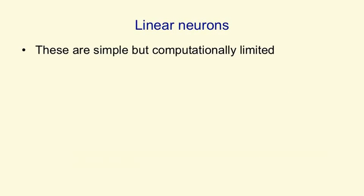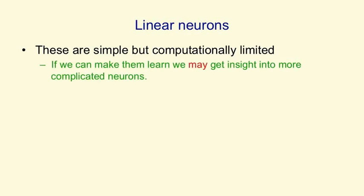The first kind of neuron I want to tell you about is the simplest. It's a linear neuron. It's simple. It's computationally limited in what it can do. It may allow us to get insights into more complicated neurons, but it may be somewhat misleading.